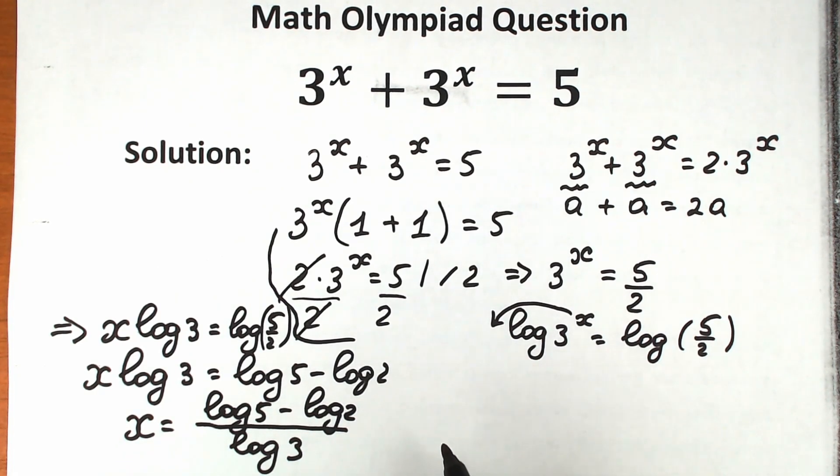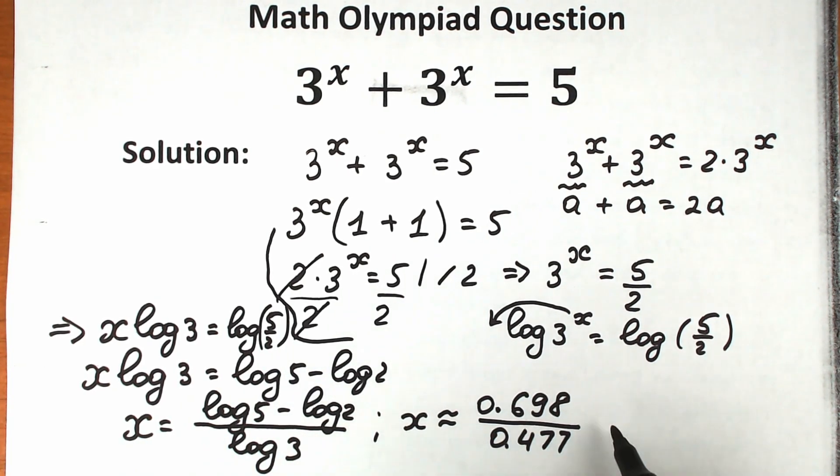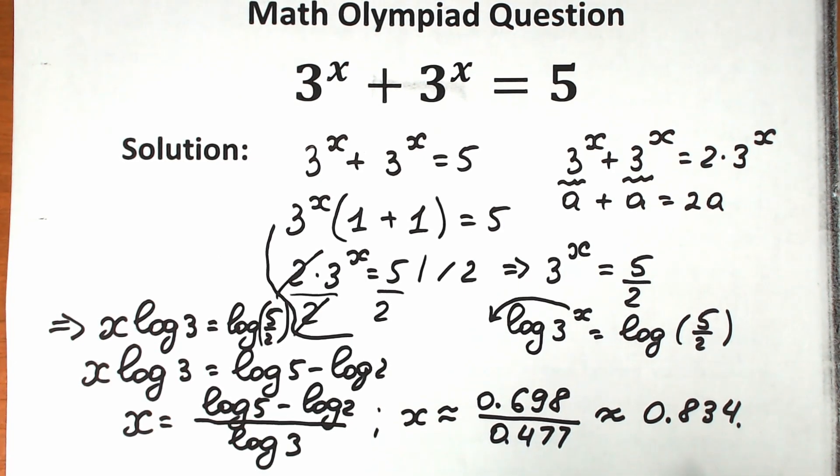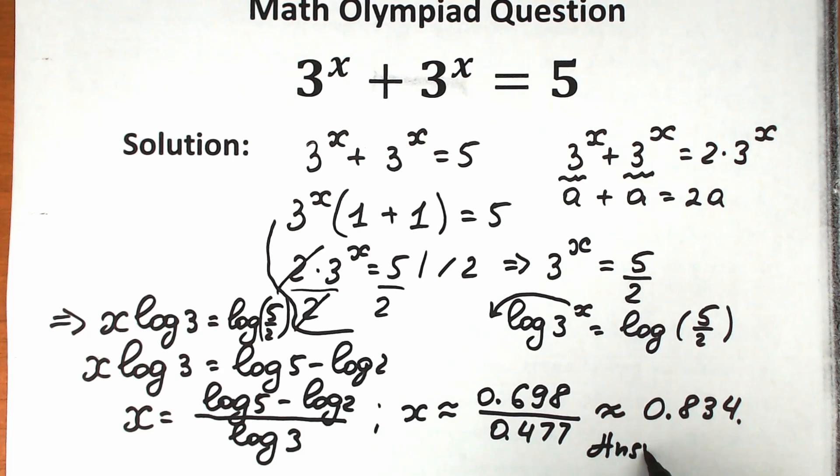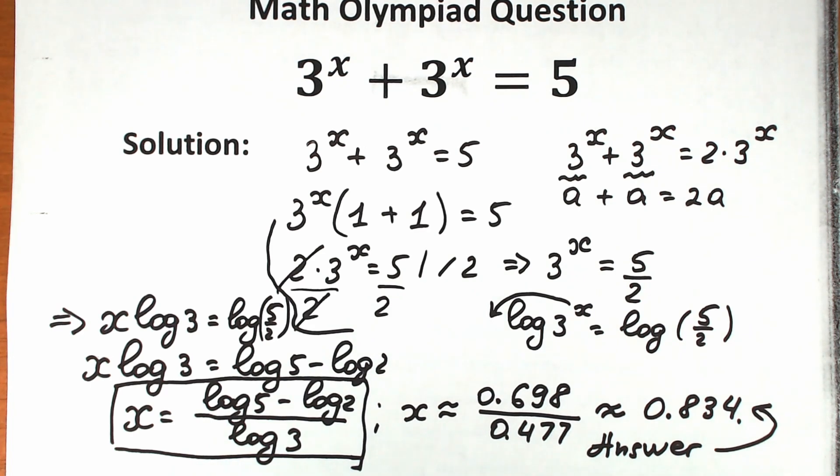This is our solution to this question. Maybe some students are interested in the approximate value to this challenge, I found it for you. x approximately equal to, in our numerator we have log 5 minus log 2 equal to 0.698. In our denominator we have log 3 equal to 0.477. So x approximately equal to 0.834. This is our approximate solution to this challenge. This is our general answer for your exam, you can easily write it like that, but if you love to use your calculator you can easily find the approximate solution, x approximately equal to 0.834.